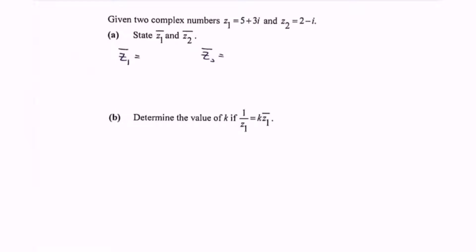Part A: state the conjugate of z sub 1 and the conjugate of z sub 2. For the conjugate of z sub 1, we focus on the imaginary part and change the sign, giving us 5 minus 3i. Next, the conjugate of z sub 2, again changing the sign of the imaginary part, gives us 2 plus i.